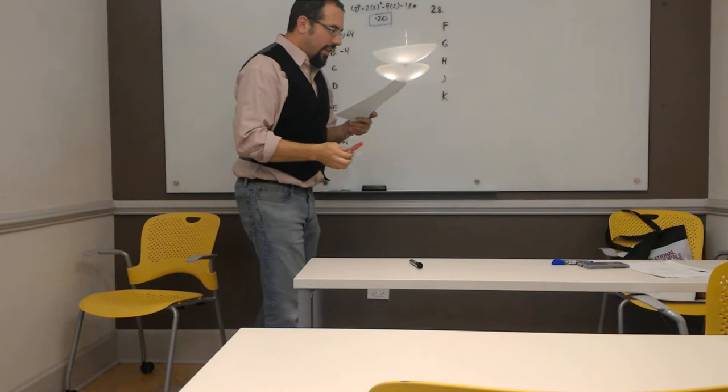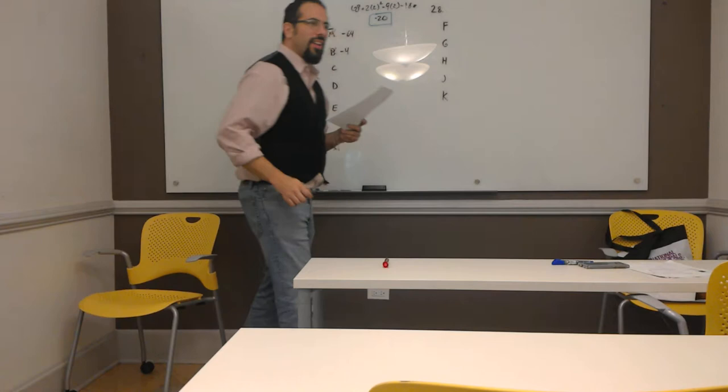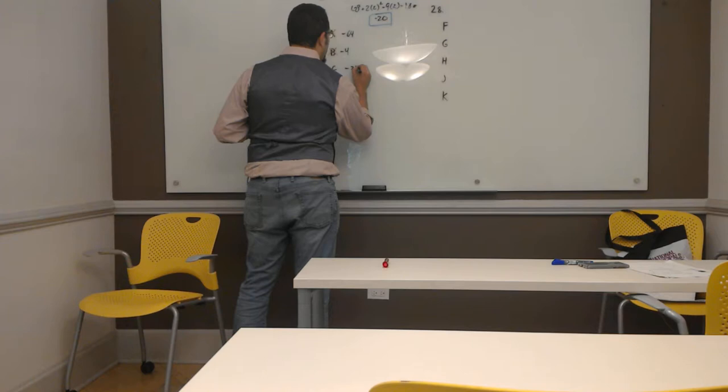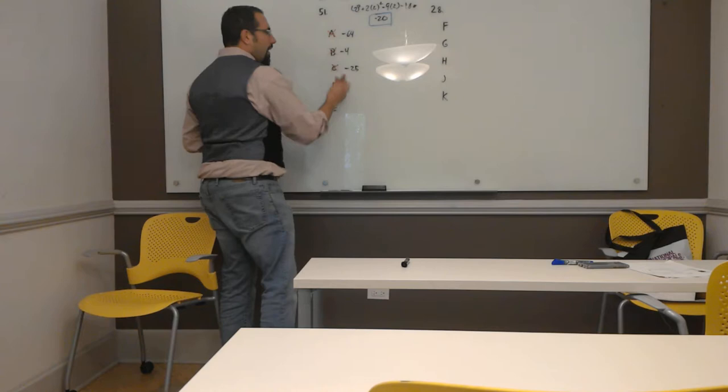Farhana, what about answer choice C? x plus 3 squared times x minus 3. That one's going to be close, negative 25. Ooh, negative 25. We're getting there, but not quite. So again, we can cross this answer out.